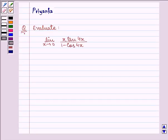Hi and how are you all today? The question says evaluate limit x approaches 0, x tan 4x upon 1 minus cos 4x. Now let us quickly solve the given question.